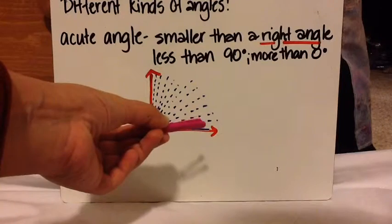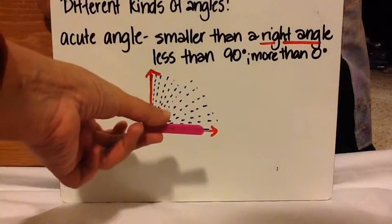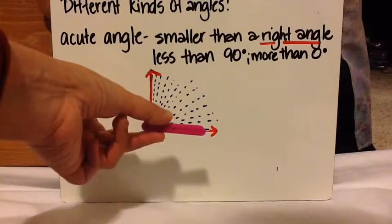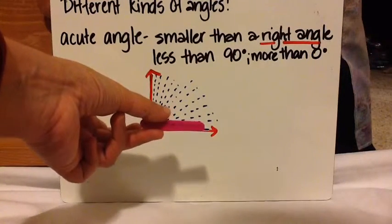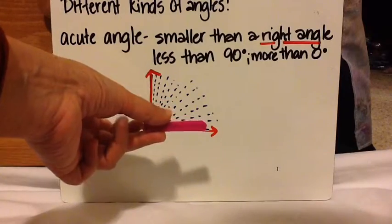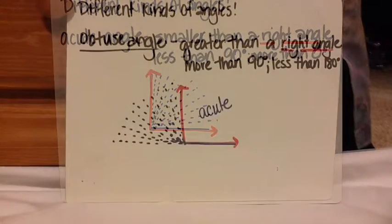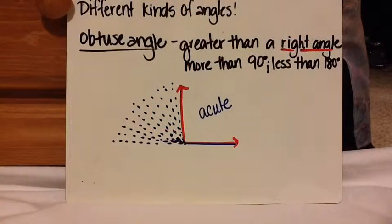If you come to zero degrees — where the two rays line up — that's not really an angle, or there's no visible angle, if you want to put it that way.